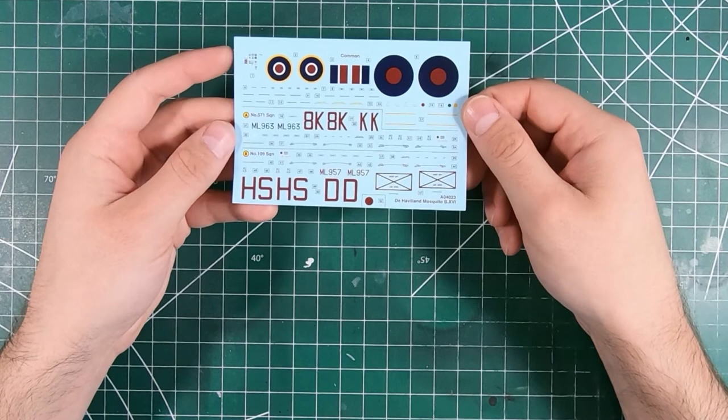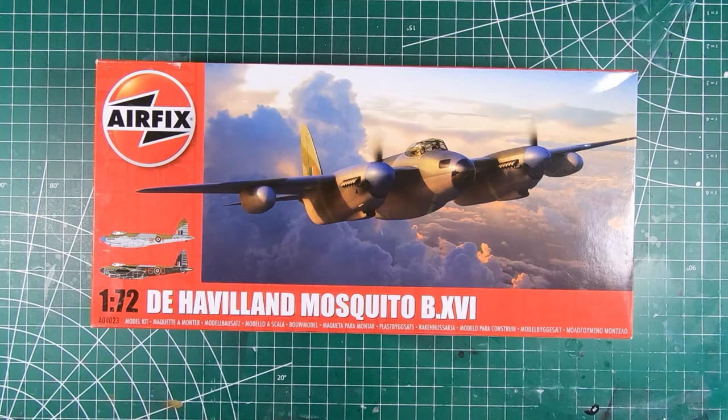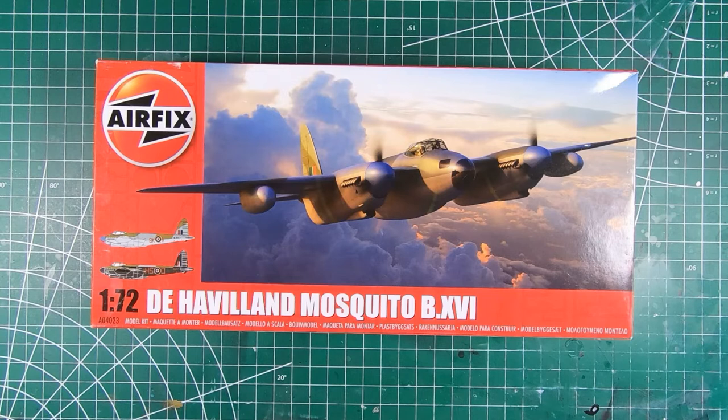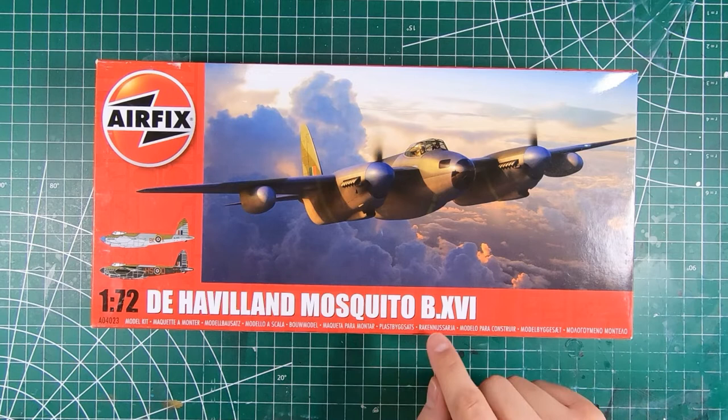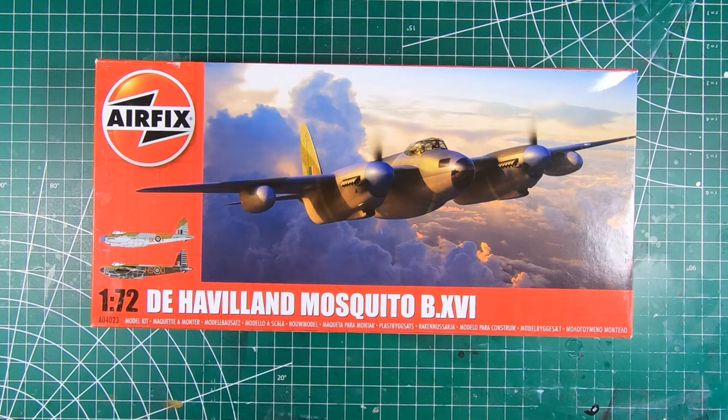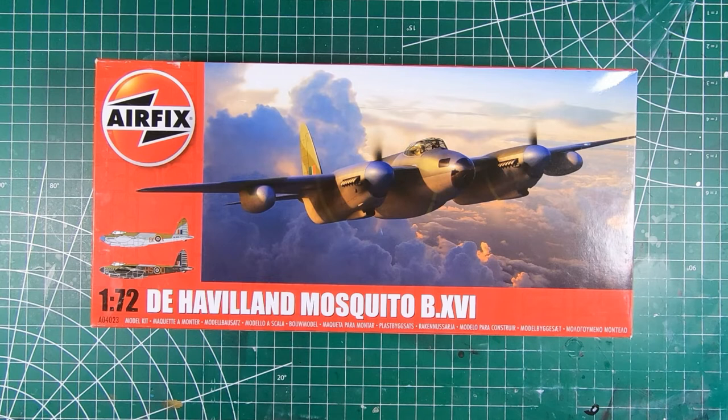So the new 1:72nd scale Airfix mosquito. On the upside, we finally have a two-stage supercharged Merlin-engined mosquito in plastic with no resin conversion work to have to be done. On the negative side, this is not exactly a Mark 16 as they say it is. Parts of this are more appropriate for the Mark 35 target tug. A lot of people are going to want to sharpen their pitchforks and light torches and go down and angry mob Airfix for making such an obvious goof.